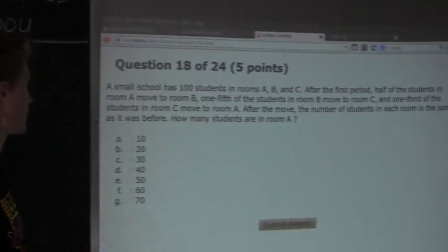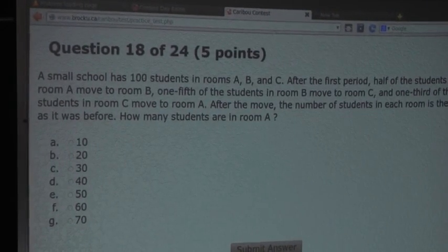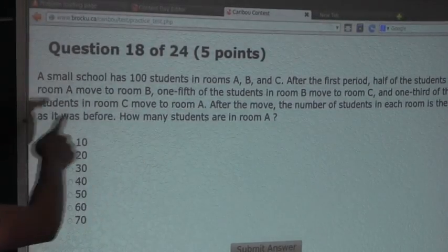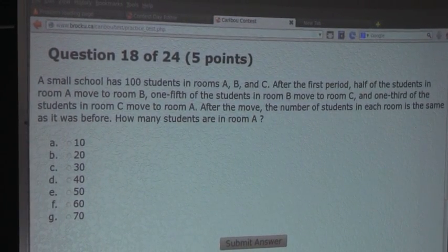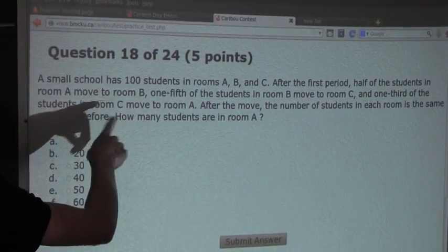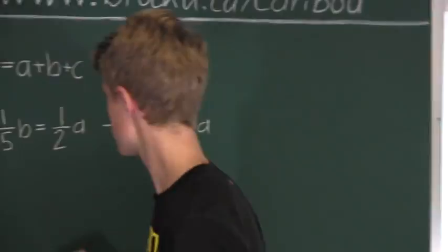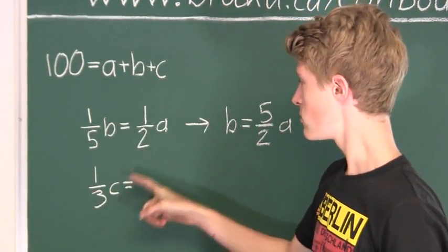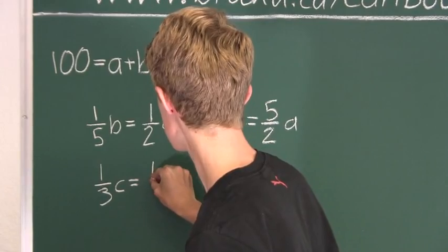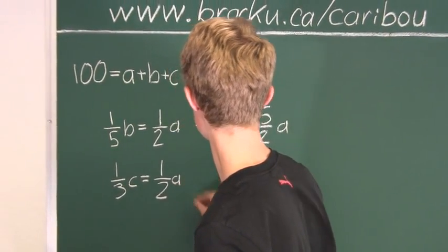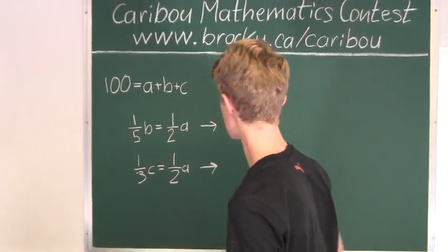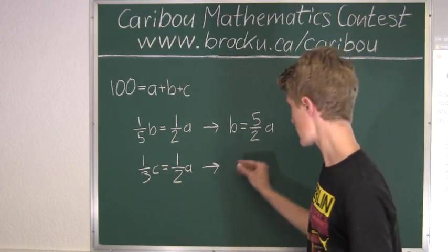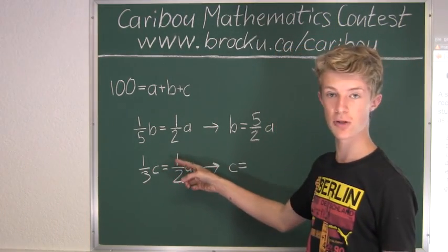Now let's find another equation that solves for C in terms of A. Looking at room A, the number of students leaving, which is half the students — (1/2)A — must equal the number of students entering the room, which is (1/3)C. So we have (1/3)C = (1/2)A. Since we want C in terms of A, we multiply both sides by 3, giving us C = (3/2)A.